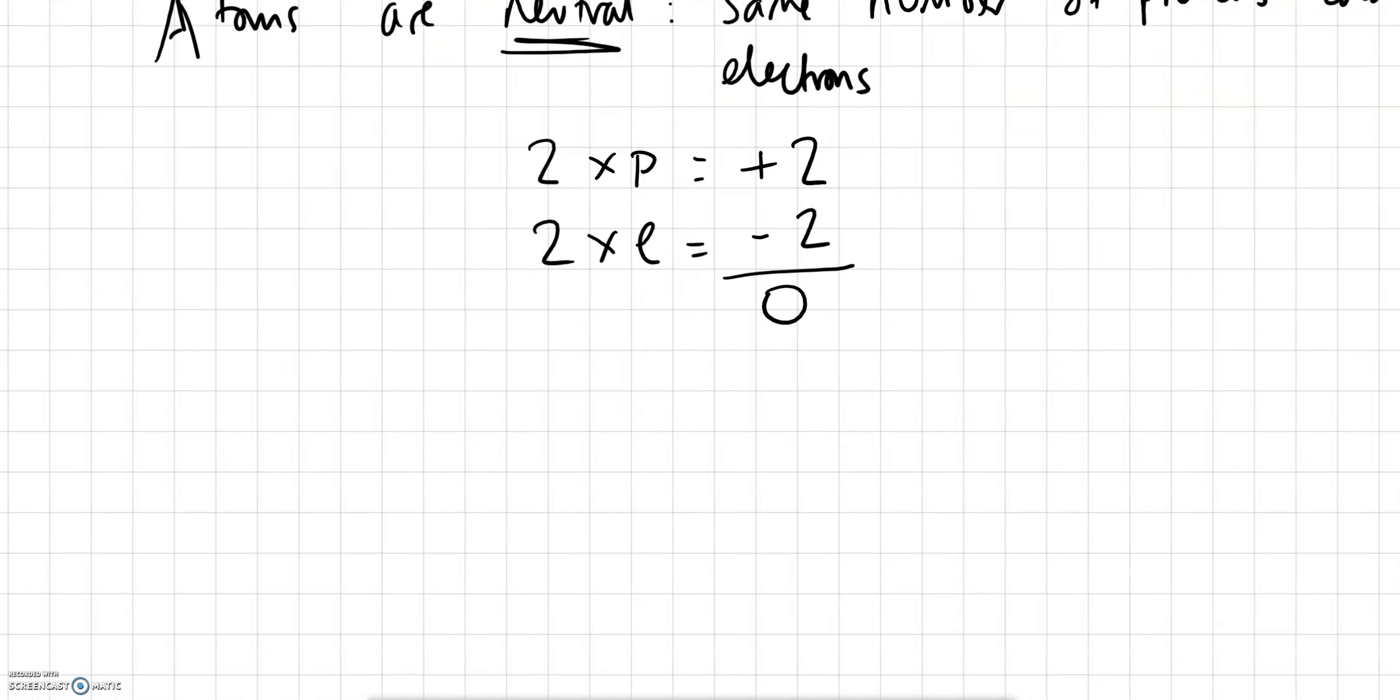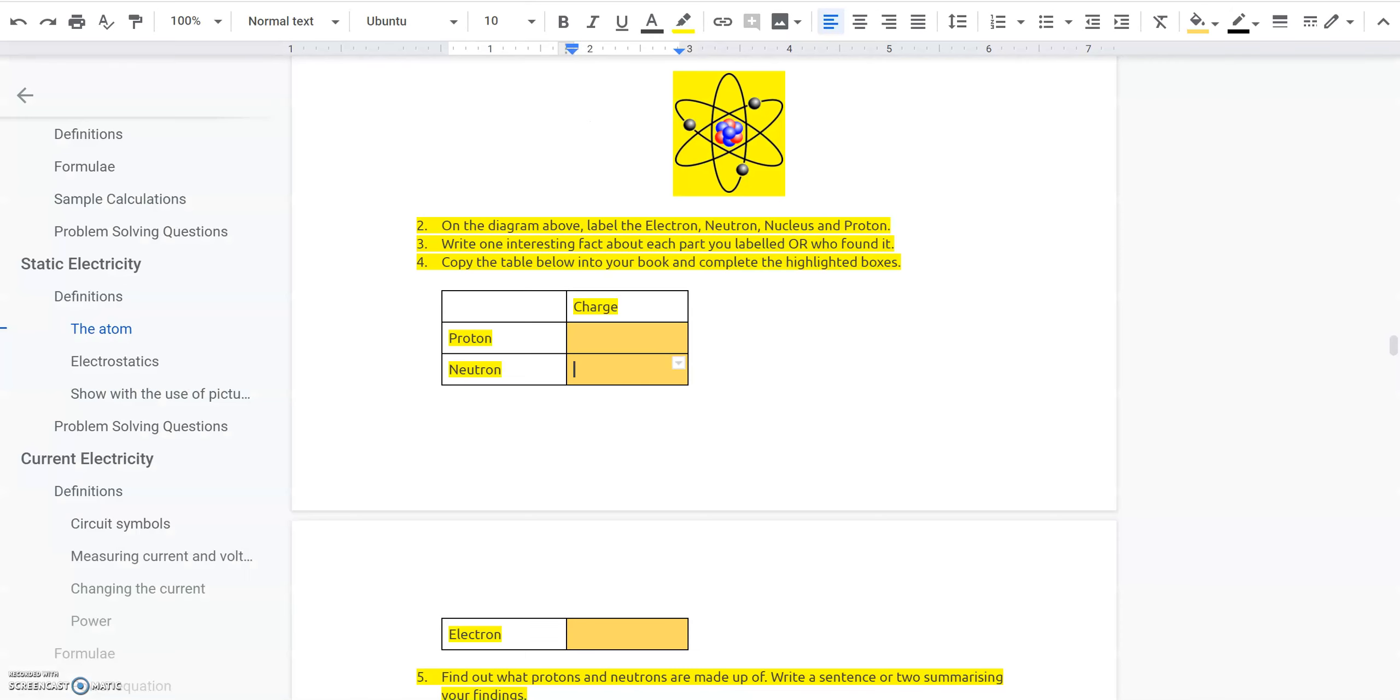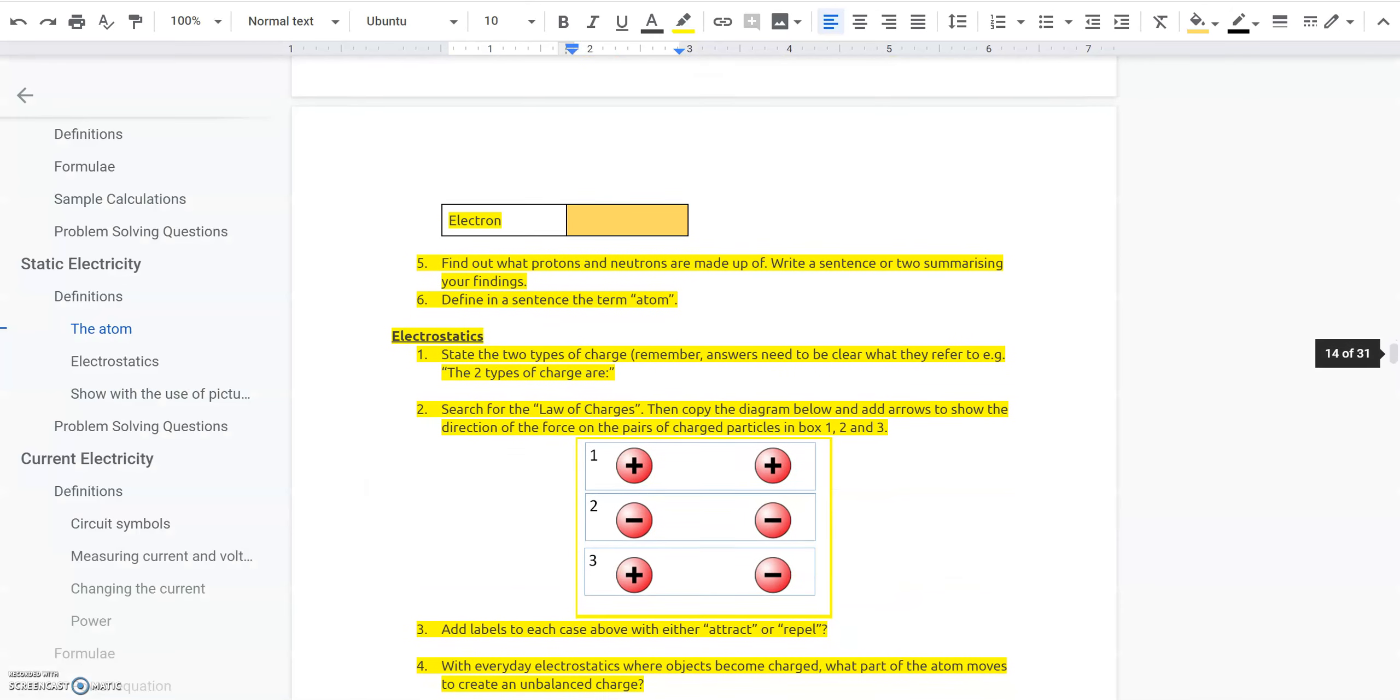And that's the key thing, atoms are neutral. If you don't want a neutral atom then it's called an ion and that's when we add or take away an electron. And it's going to kind of link into the next topic which is down here, electrostatics.